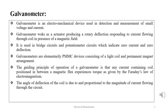Galvanometers are essentially PMMC devices consisting of a light coil and permanent magnet arrangement. The guiding principle of operation is that any current-carrying coil positioned between a magnetic flux experiences torque as given by Faraday's laws of electromagnetism. The angle of deflection of the coil is proportional to the magnitude of the current flowing through the circuit.